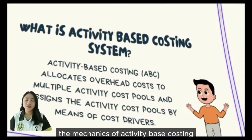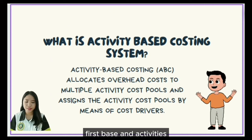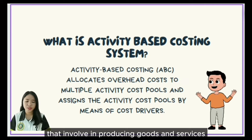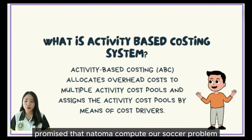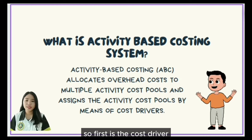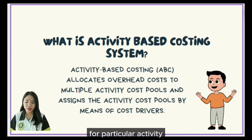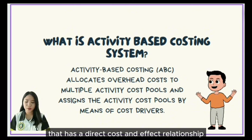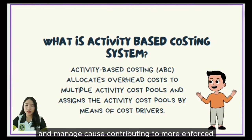The mechanics of Activity-Based Costing: ABC is a cost method that allocates costs based on the activities and processes involved in producing goods and services and assigns the activity cost pools to products by means of cost drivers. A cost driver is a factor that causes changes in the cost pool for a particular activity, used as a basis for cost allocation due to its direct cost-and-effect relationship. Activity cost pools gather all costs for a product before they are allocated, helping organizations better understand and manage costs.